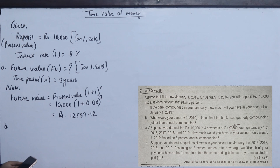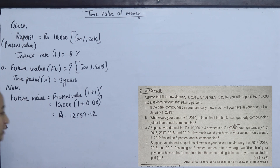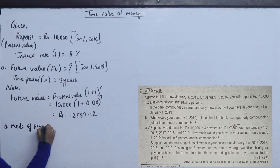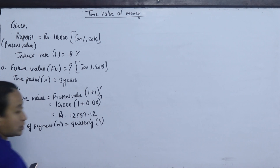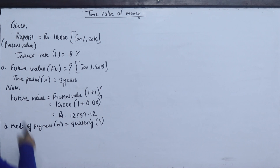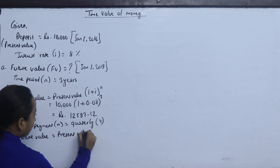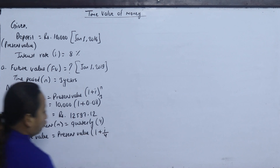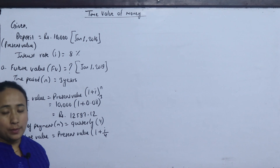Now Part B: What would your January 1, 2019 balance be if the bank used quarterly compounding rather than annual compounding? The formula for quarterly compounding is: Future value = Present value × (1 + i/4) to the power of 4n, where i = 8%.